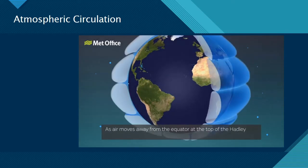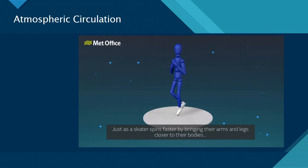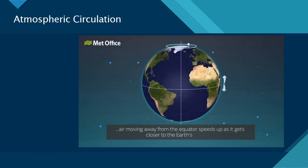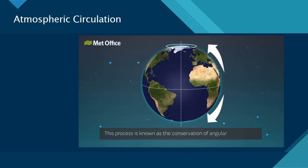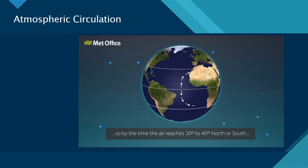How does this lead to eastwards flowing jet streams and prevailing winds? As air moves away from the equator at the top of the Hadley cells toward higher latitudes, it starts to be deflected by the Coriolis force. Just as a skater spins faster by bringing their arms and legs closer to their bodies, air moving away from the equator speeds up as it gets closer to the Earth's spin axis. This process is known as the conservation of angular momentum. The magnitude of the Coriolis force increases towards the poles. So by the time the air reaches 30 to 40 degrees north or south, it is moving in an eastward direction.